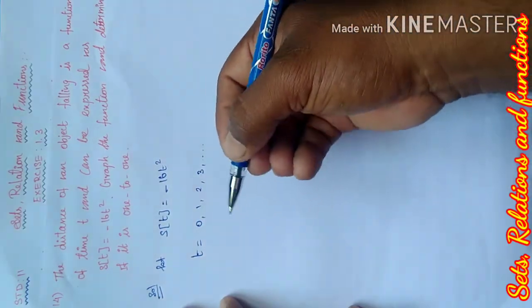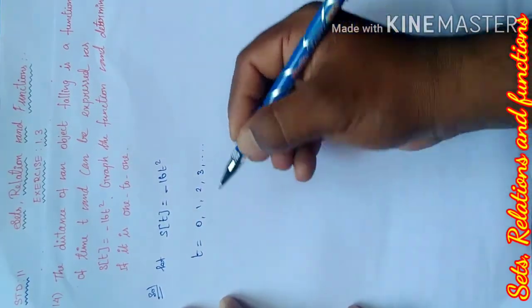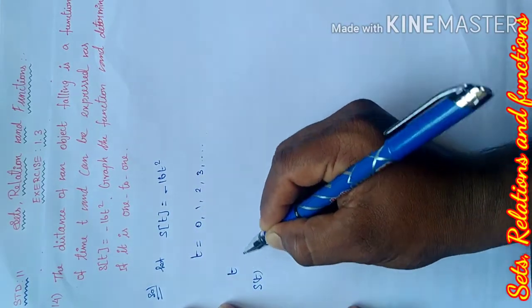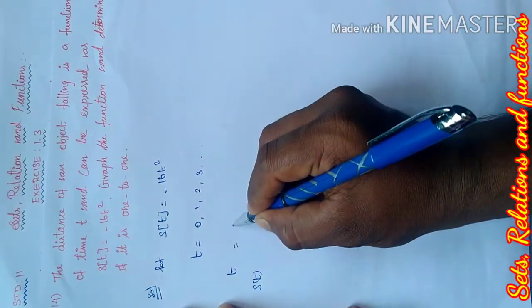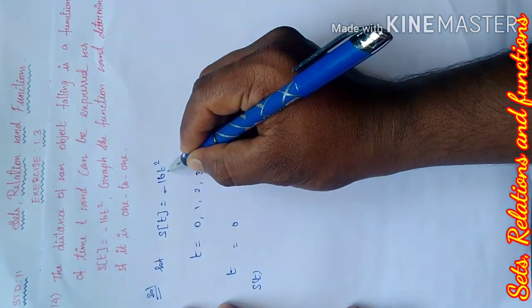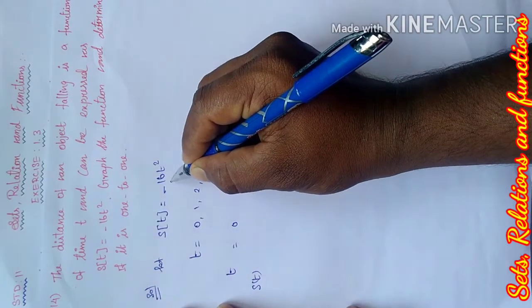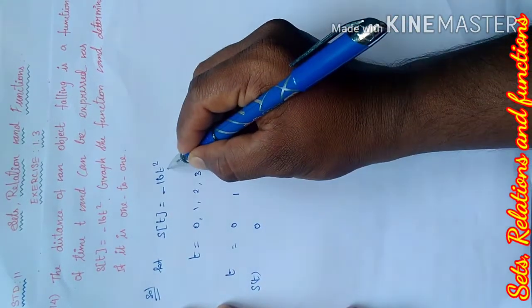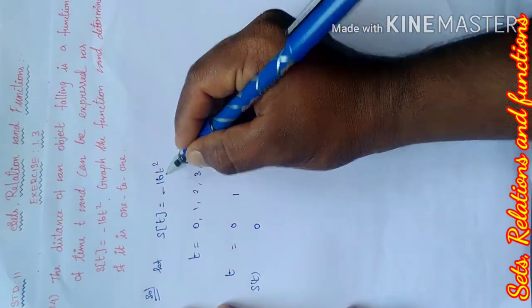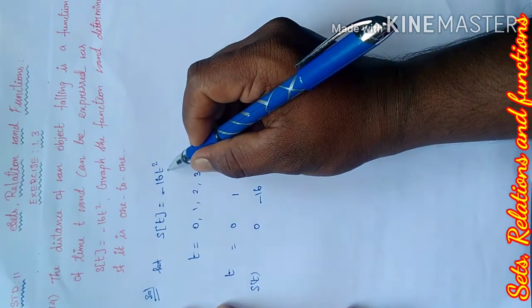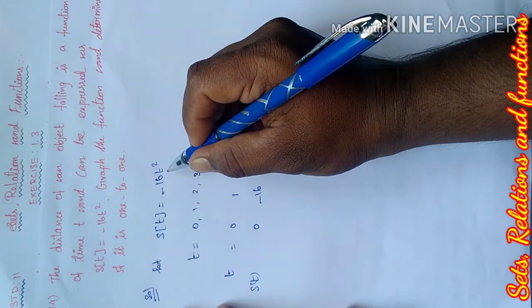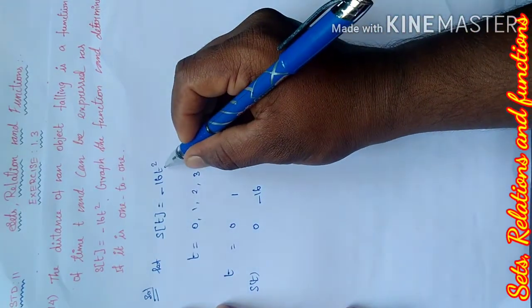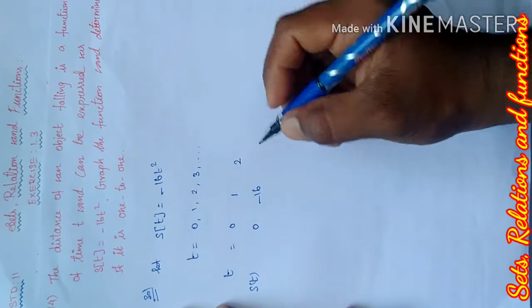Apply values: t equals 0, 1, 2, 3. When t equals 0, s of 0 equals 0. When t equals 1, s of 1 equals minus 16. When t equals 2, s of 2 equals 2 into 2 which is 4, 4 times 16 equals 64, so minus 64.